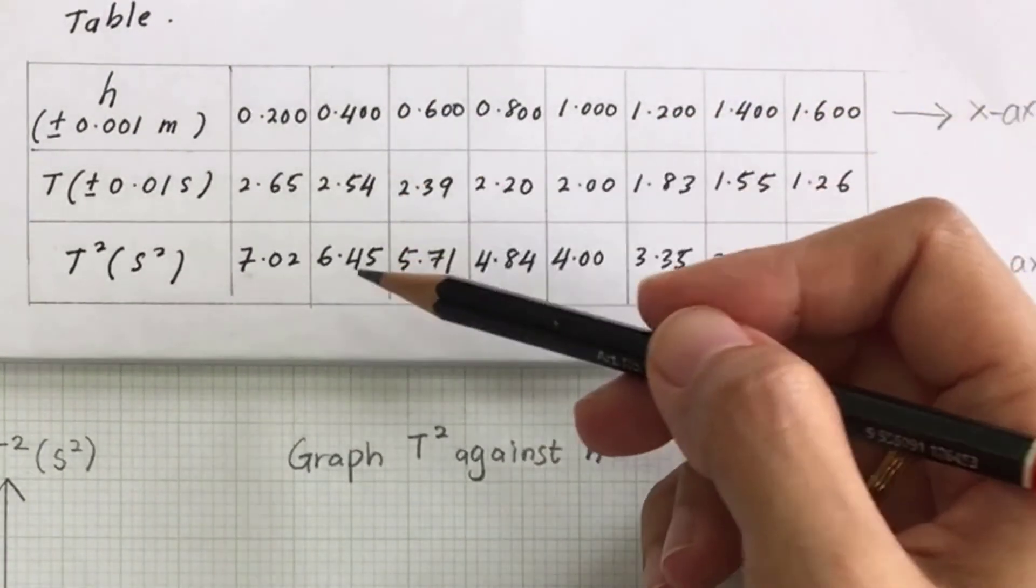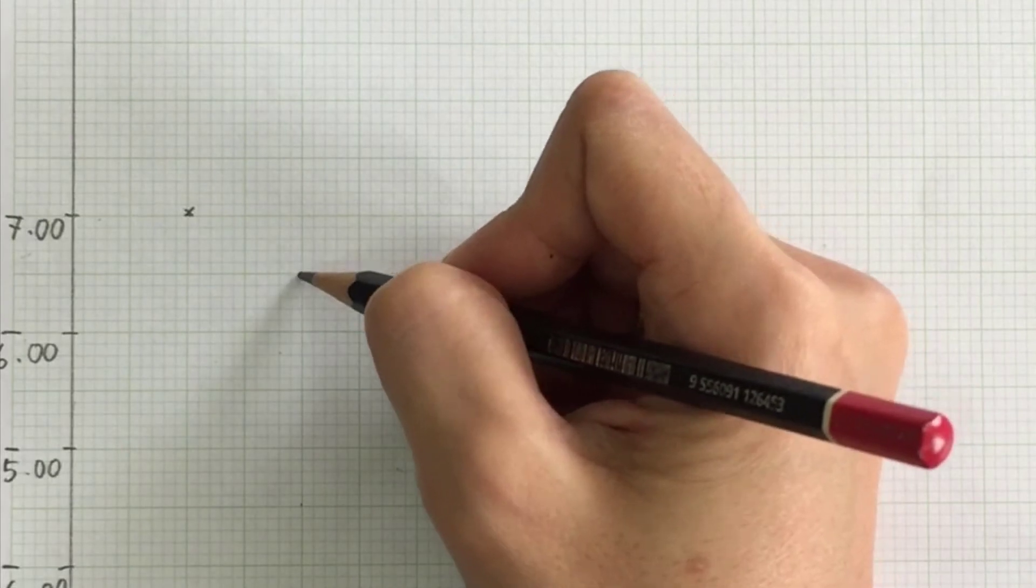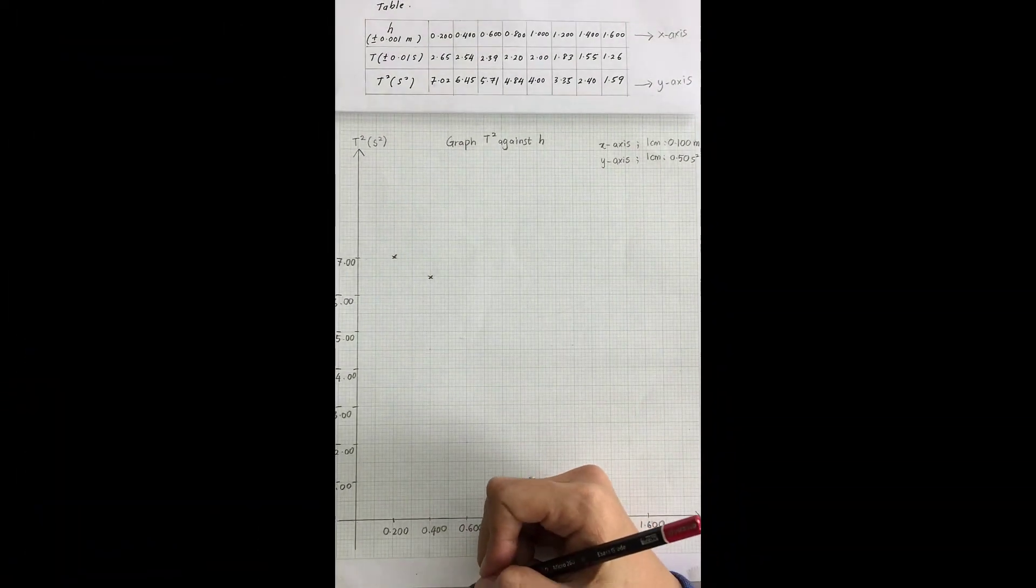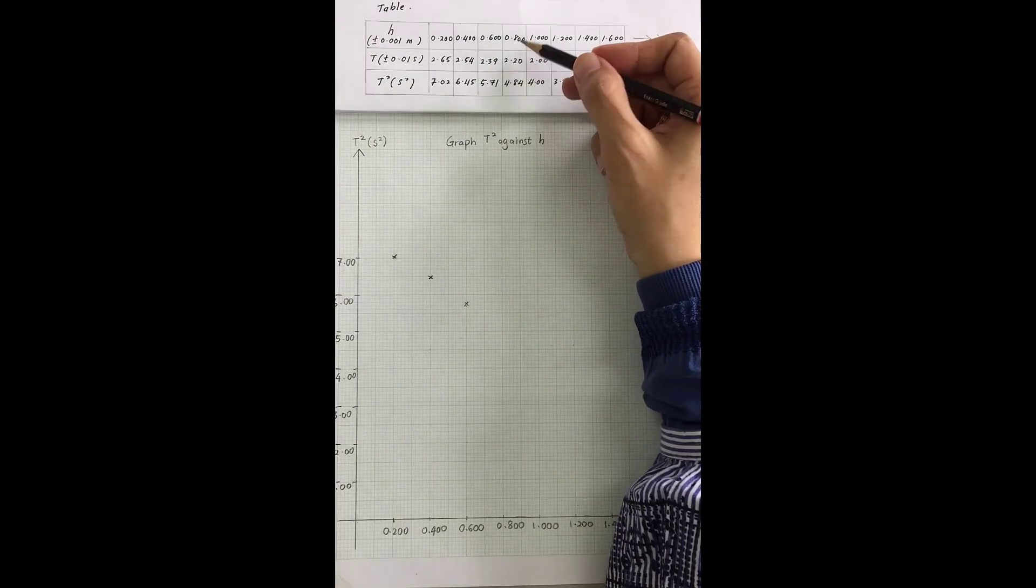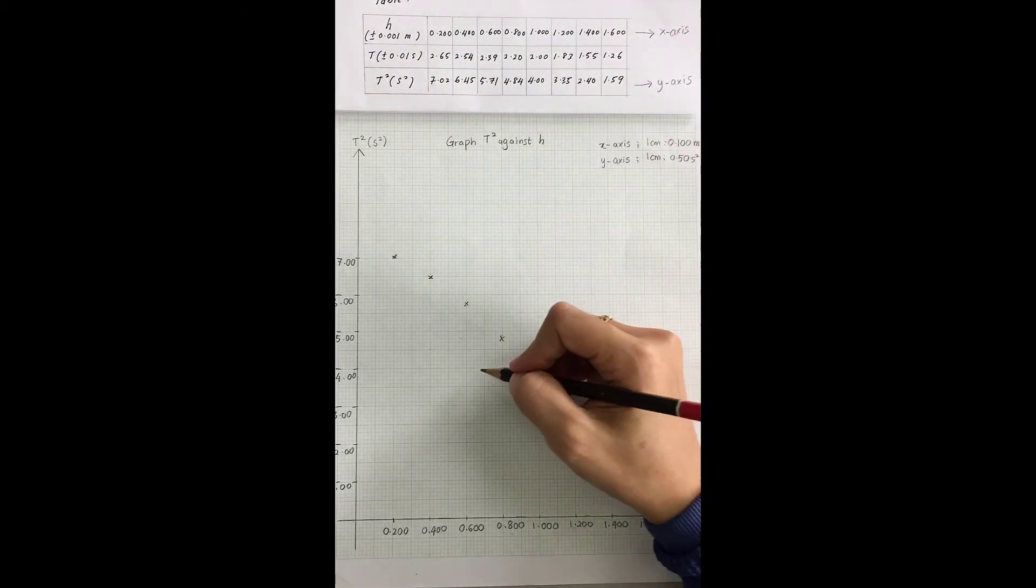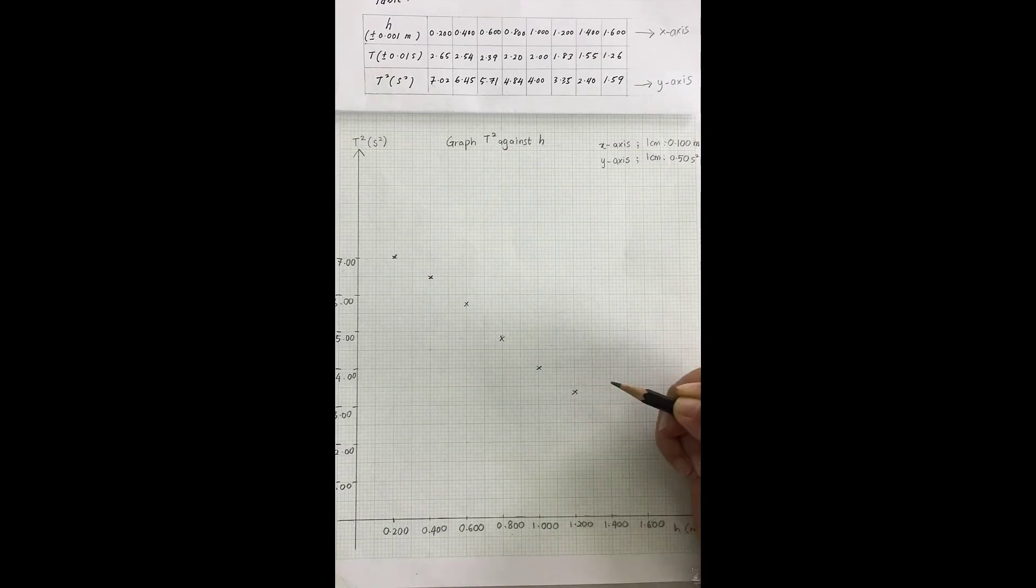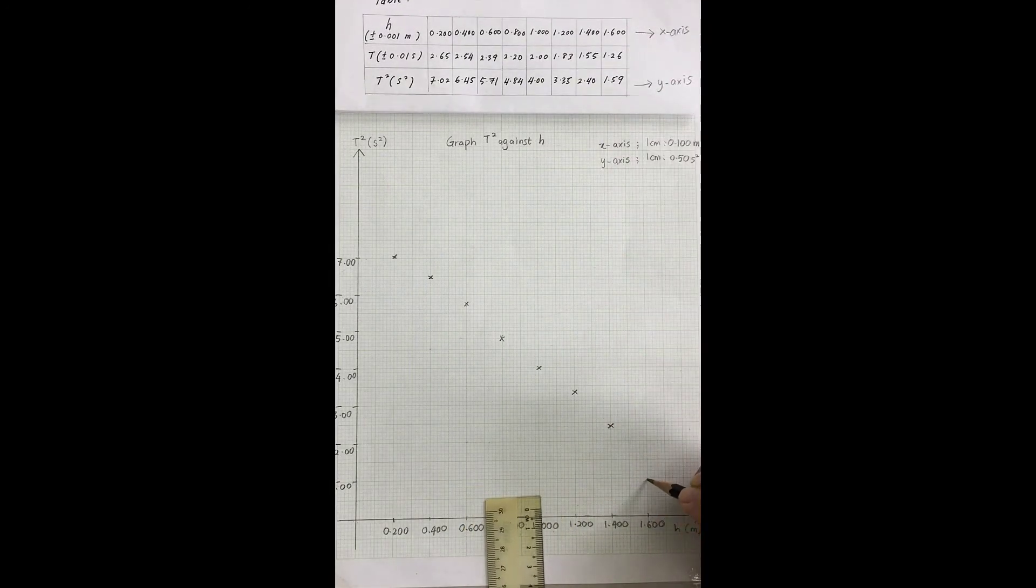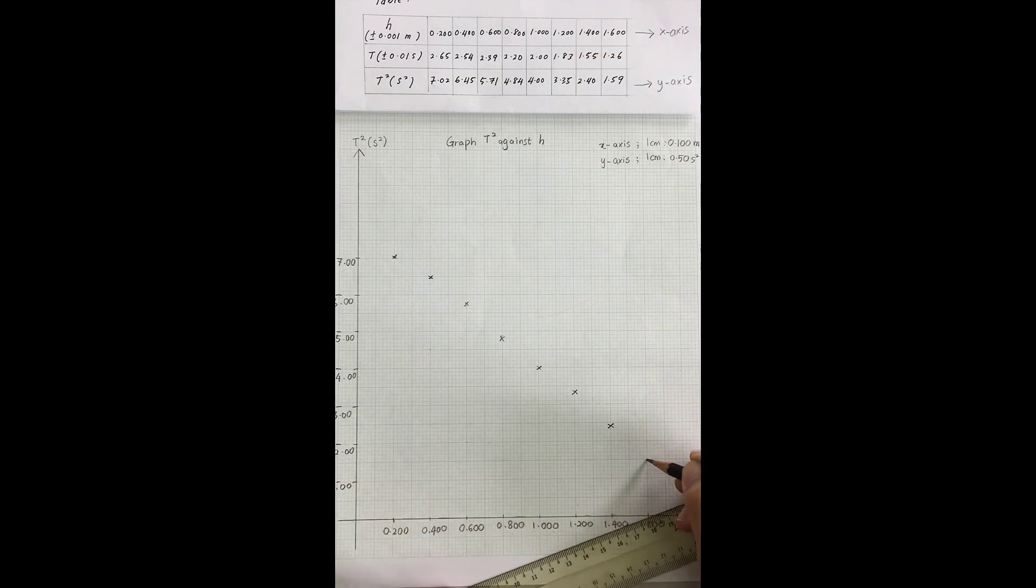And then continue with the next data: 6.45 and 0.4. So this is your 0.4, 6.45 is up here. Make sure you cross it with the symbol X. Continue plotting all remaining data points, checking with your ruler to ensure accuracy at 1.6.